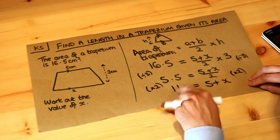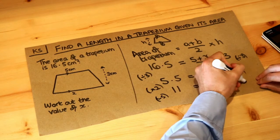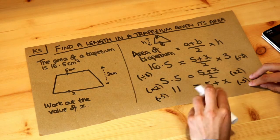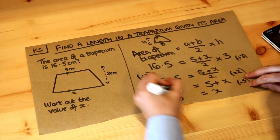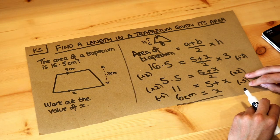And then x plus 5 is 11. We can just subtract 5 from both sides. That gives us x on the right and we get 6 on the left. And the unit is centimeters. So that's the final answer: x has a value of 6 centimeters.